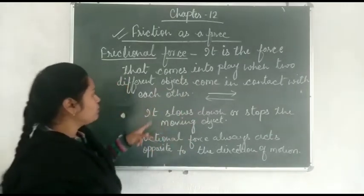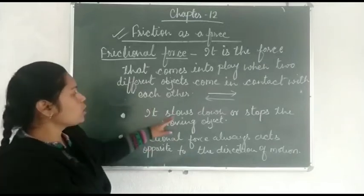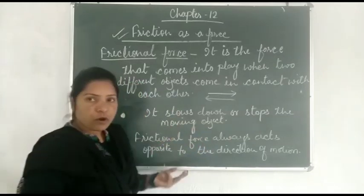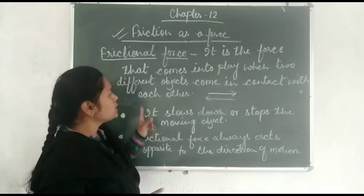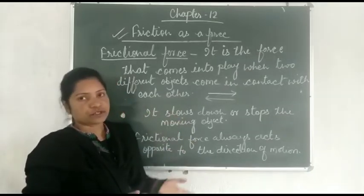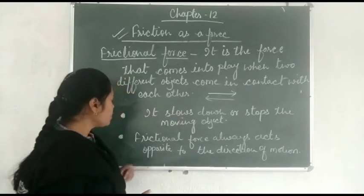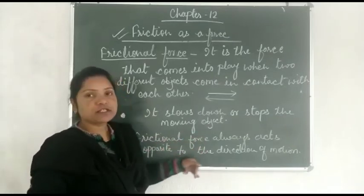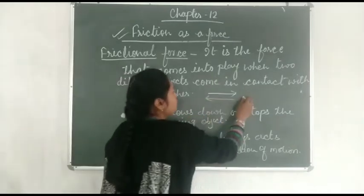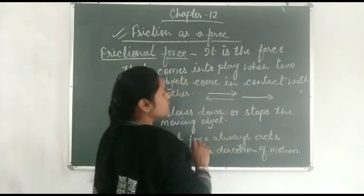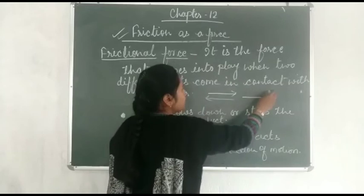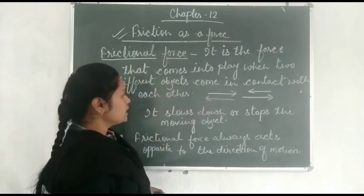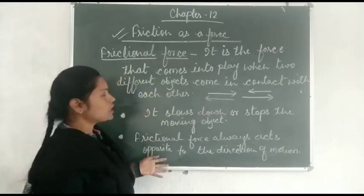There are two important points of frictional force. The first one is it slows down or stops the moving object, because it opposes the direction of motion of one object over another. The second point is frictional force always acts opposite to the direction of force — when one object is moving in one direction, frictional force acts in the opposite direction.